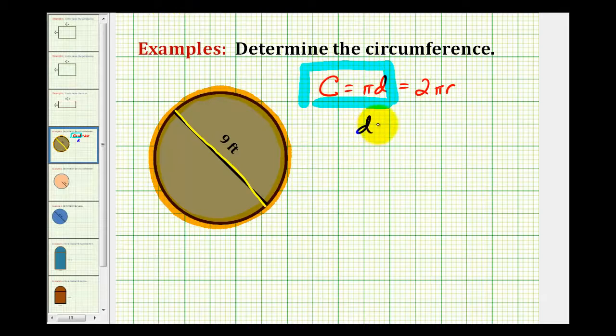Again, we have the diameter is equal to nine feet, so the circumference will be equal to pi times nine feet, which is equal to nine pi feet. We're often asked to round the circumference to the nearest tenth or hundredth, so let's go ahead and get a decimal approximation for this.